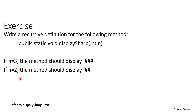In this session we will write the code for a couple of recursive methods. The first problem says: write a recursive method with signature 'public static void displaySharp(int n)'. The method takes a number and returns nothing (void). If n is 3, display 3 sharp symbols; if n is 2, display 2 sharps. So according to the value of n, you have to display that many sharps. Let's think about the method first and then write the code.